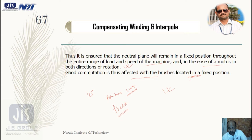As this compensating winding produces very little flux, for larger machines it is not possible for compensating winding alone to fully neutralize the armature reaction. That is why in the case of larger machines, in addition to compensating winding, we also use interpoles.